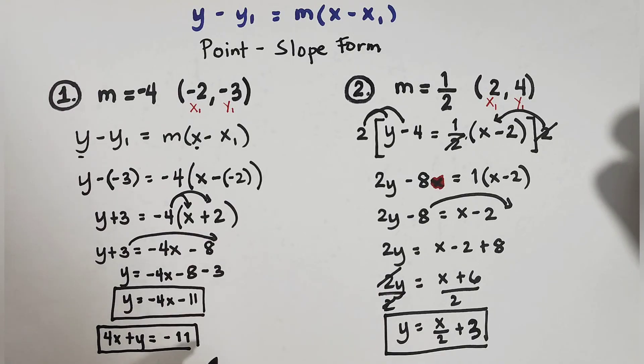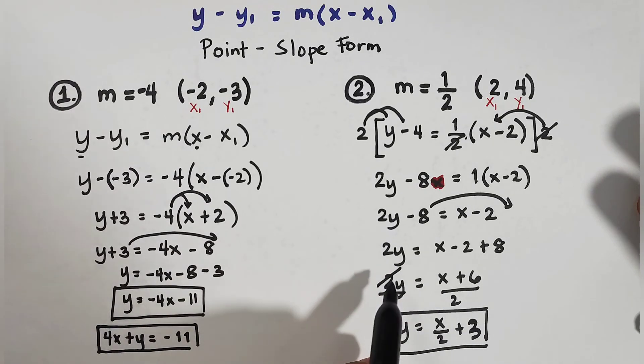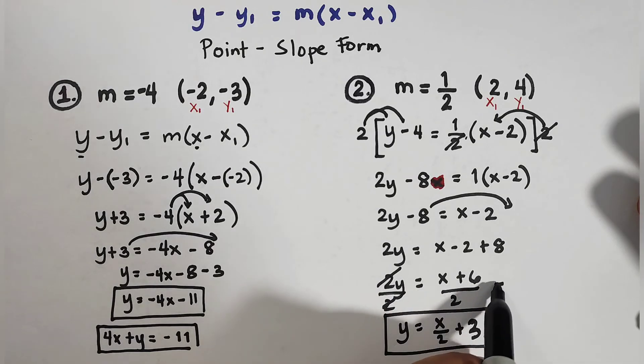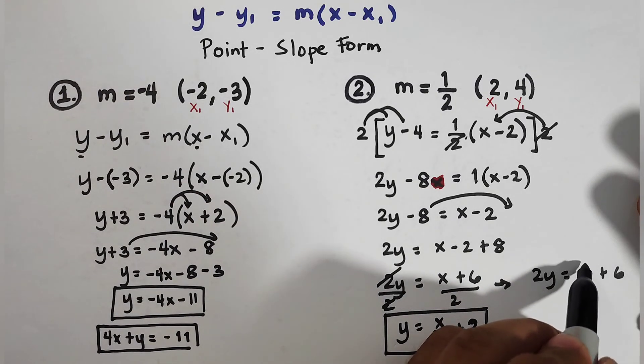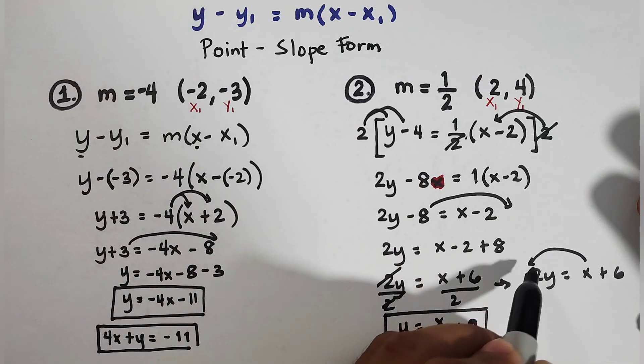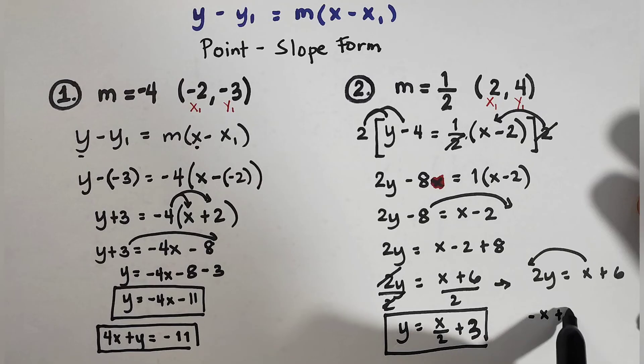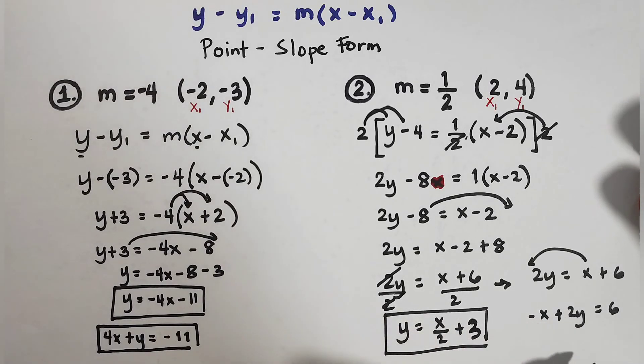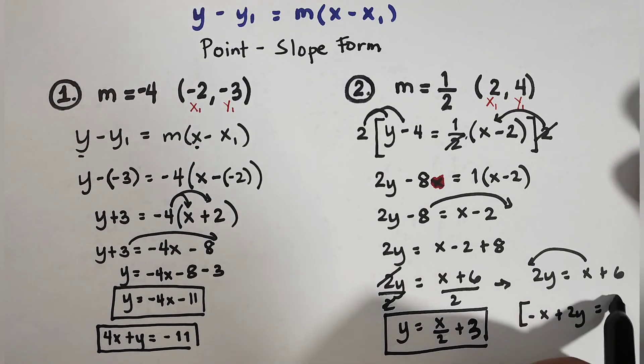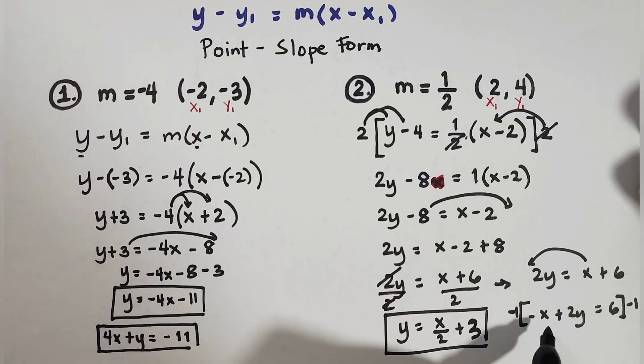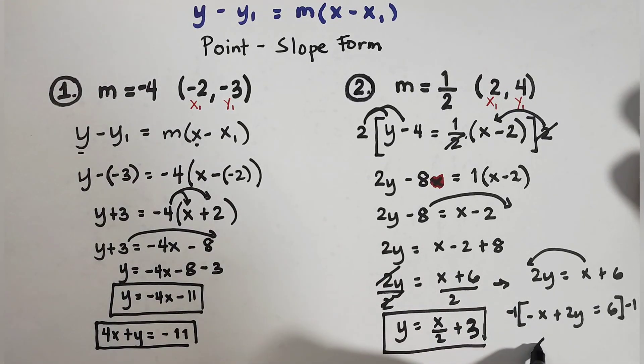And then for the standard form, this is what I will use. Originally, we have 2y equals x plus 6. I will transpose this here. It will become negative x plus 2y equals 6. And since this is negative, to make it positive, the first term needs to be positive. Multiply the whole equation by negative 1. So what will happen here, it will change all the signs of the terms. So we have x minus 2y equals negative 6. And this is now the standard form.